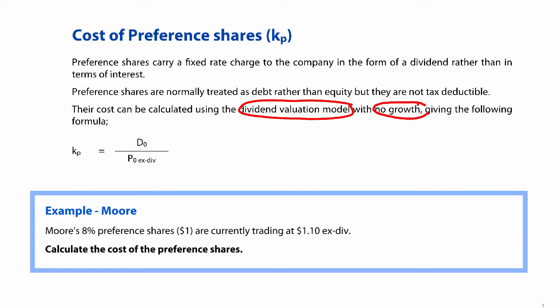But the key bit that we have now is that there is no growth. So therefore, the cost of preference shares is essentially the same as the cost of equity. But if there is no growth, then g is equal to zero.